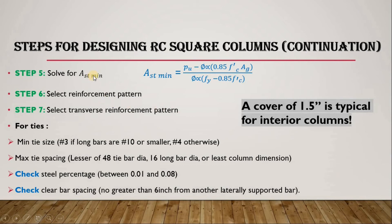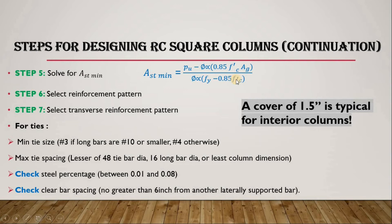Step five: solve for the minimum area of steel Ast. Now that we know the column size, we calculate the steel area needed. The formula is: Ast_min = [PU − φ × α × 0.85 × fc' × Ag] / [φ × α × (fy − 0.85 × fc')]. This gives the minimum steel area to be placed inside the column.